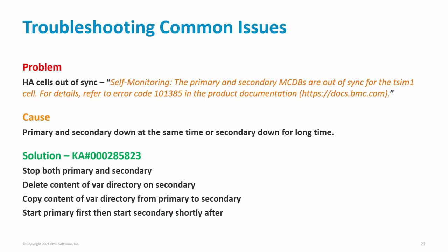With version 11.303 and higher, if the TSIM server high-availability cells are out of sync, there will be a self-monitoring event to indicate this. Remote HA cells can also go out of sync, but there is no self-monitoring event for those. The typical reason is if both primary and secondary cells were down at the same time. To resolve this, stop both cells, delete the contents of the VAR directory on the secondary, copy the VAR directory contents from primary to secondary, then start the primary cell and shortly afterwards start the secondary cell.